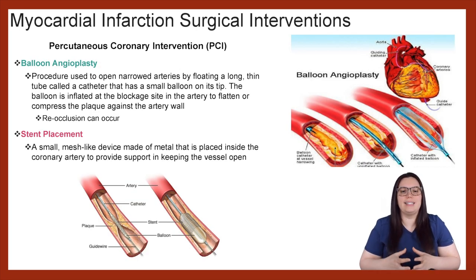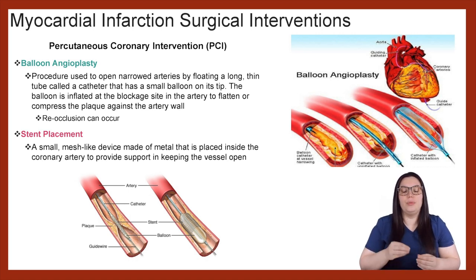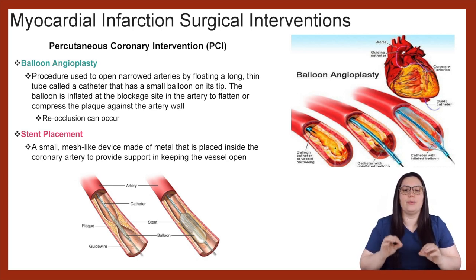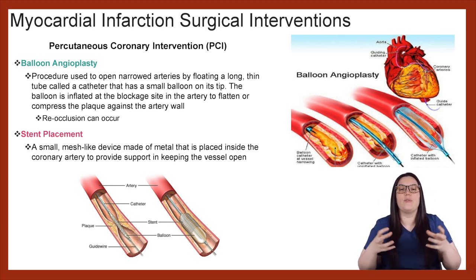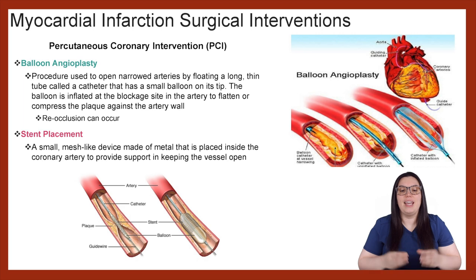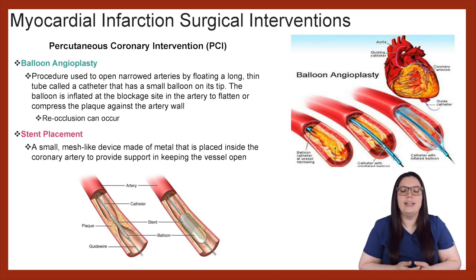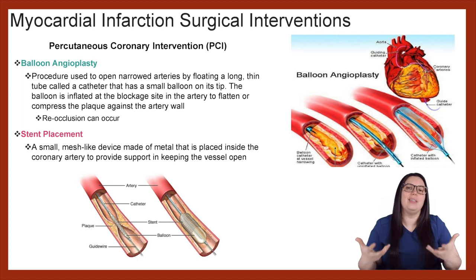When it comes to balloon angioplasty, the procedure is used to open narrowed arteries by floating a long thin tube called a catheter — which has a small balloon on its tip — into that blocked artery. The balloon is inflated in that artery and helps flatten or compress the plaque against the artery walls. If we don't use stents, a lot of times reocclusion can take place, so it's important that we monitor them post-cardiac cath. If a stent is needed, a small mesh-like metal device is placed inside the coronary artery to provide support and keep the vessel walls open.